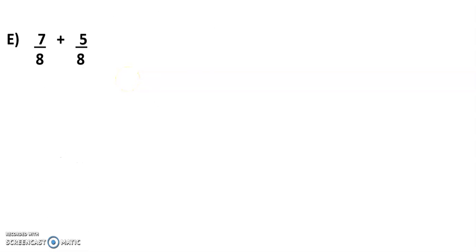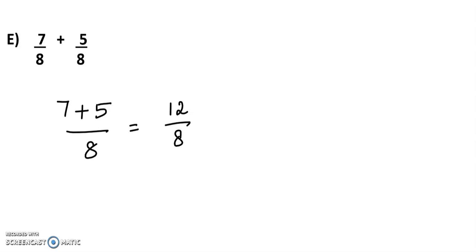Next: 7/8 plus 5/8. It is also a like fraction, so we add the numerators: 7 plus 5 equals 12. So the answer is 12/8.